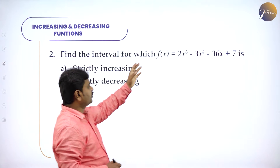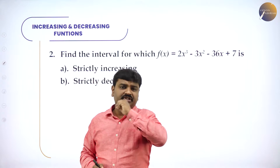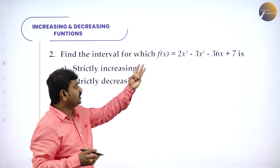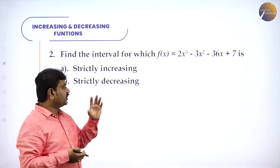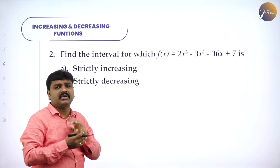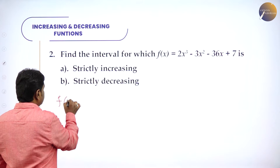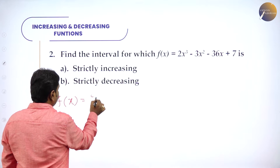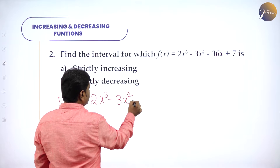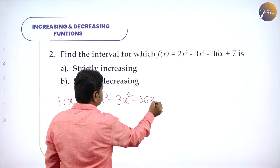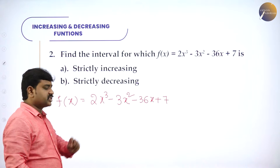Find the interval for which f(x) = 2x³ − 3x² − 36x + 7 is increasing or decreasing. This is degree 3; when you differentiate it becomes degree 2, which will have two roots. I'll teach you a new technique — instead of the table, I'll teach you the wavy curve method. f(x) = 2x³ − 3x² − 36x + 7. Now differentiate both sides with respect to x.